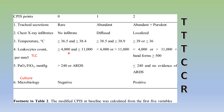For total leukocyte count: 4,000 to 11,000 is 0 points. Less than 4,000 or more than 11,000 is 1 point. If less than 4,000 or more than 11,000 with band forms, it is given 2 points. For the ratio of PaO2 by FiO2: more than 240 or ARDS is 0 points. If less than 240 with no evidence of ARDS, it is 2 points. For culture: if negative, 0 points; if positive, 2 points.